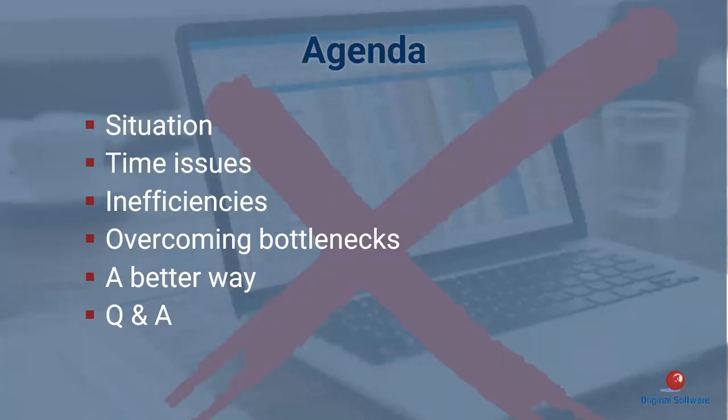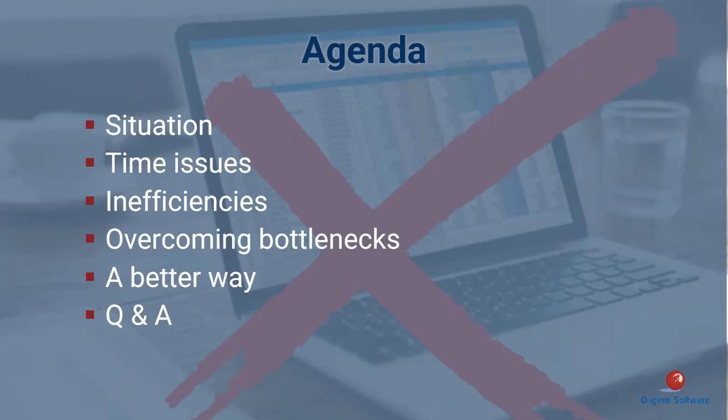Just to set the scene: user acceptance testing is a critical element to any successful software change. Typically it's sometimes forgotten about from a planning and execution point of view, generally done towards the end of the project. And everybody else has eaten up that lead time, so we don't have the time we want to execute the way we might want to. Some of the reasons for that include neglect, lack of tools, and technology that support UAT. Hence why many of us have resorted to spreadsheets to bring some organisation to what might be the chaos.